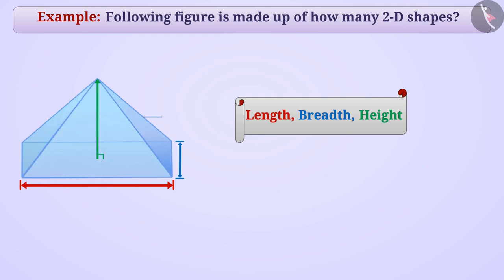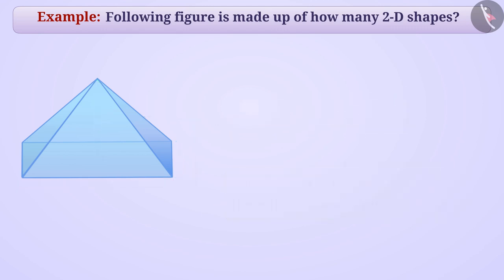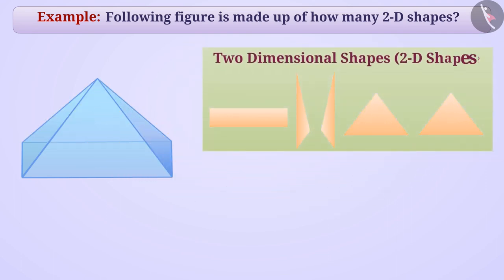So, the shown figure is a solid shape or three-dimensional shape, that is 3D shape. This shape is made up of different flat parts. So, we can say that these are two-dimensional shapes or 2D shapes.